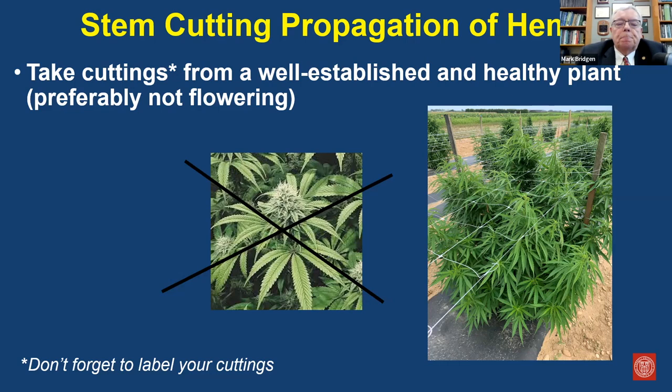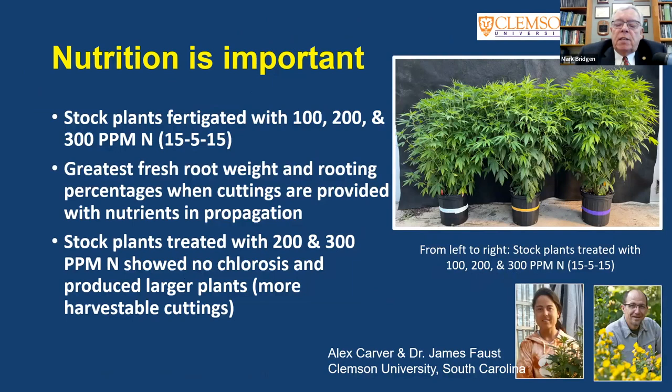Dr. James Faust at Clemson University and Alex Carver did some work on nutrition of hemp stock plants. They looked at plants fertilized with three different nitrogen levels — 100, 200, and 300 ppm — and found that stock plants receiving the higher levels (200 and 300 ppm nitrogen) grew much better, produced stronger plants, and generated more cuttings than plants receiving no or very low nutrition.